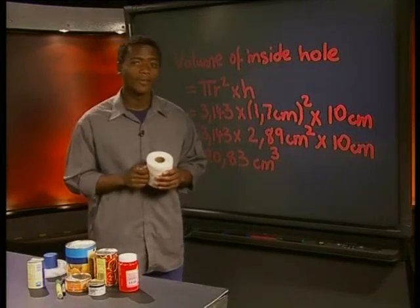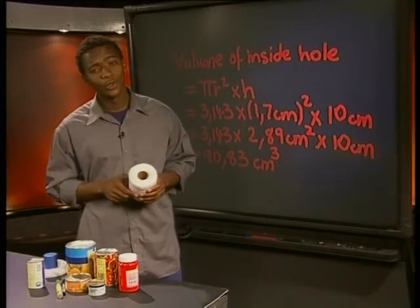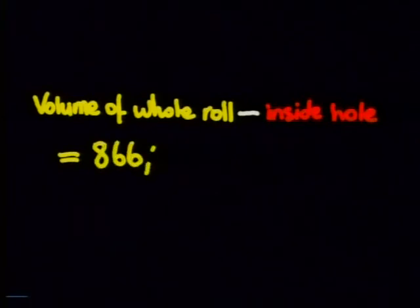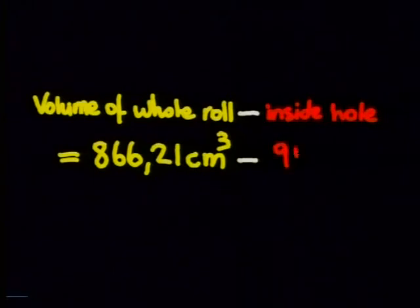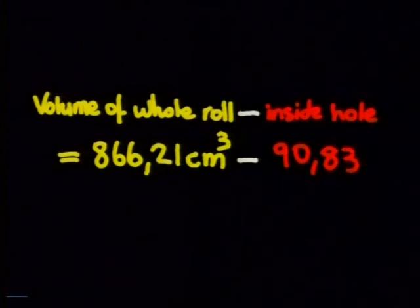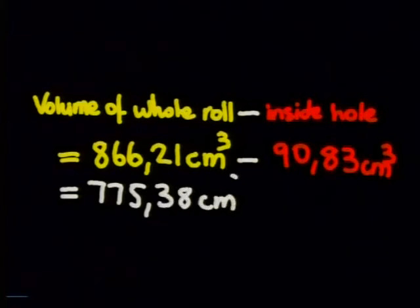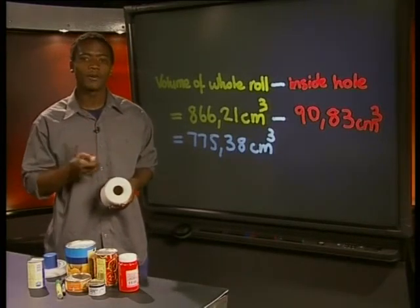Is this the answer that we're looking for? Not yet. Remember that we're looking for the volume of the part covered by paper on the roll. We need to subtract the volume of the inside hole from the volume of the whole cylinder. So we get 866.21 cubic centimeters minus 90.83 cubic centimeters, which gives us 775.38 cubic centimeters. So the volume of just the paper on this toilet roll is about 775.38 cubic centimeters.